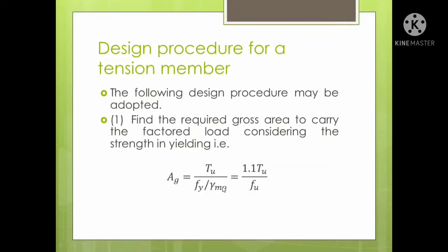Here gamma Mo is 1.1 and it has come to the numerator, so it becomes 1.1 Tu upon Fy. This means you are increasing the gross area by 10%. Tu is the factored tensile force — either you have to evaluate this or it is usually given in the problem statement.